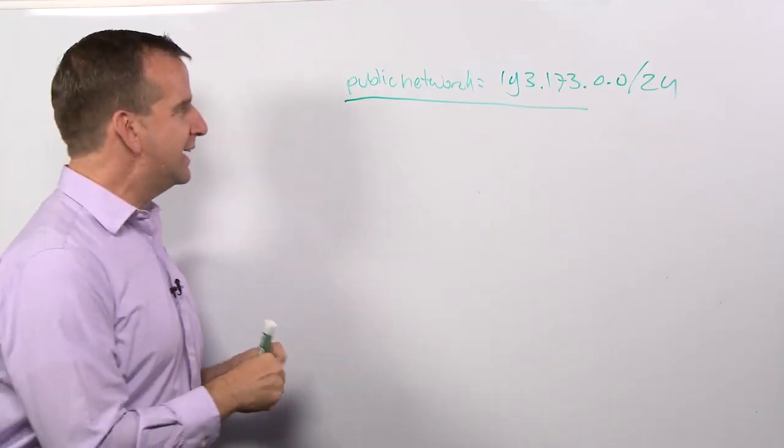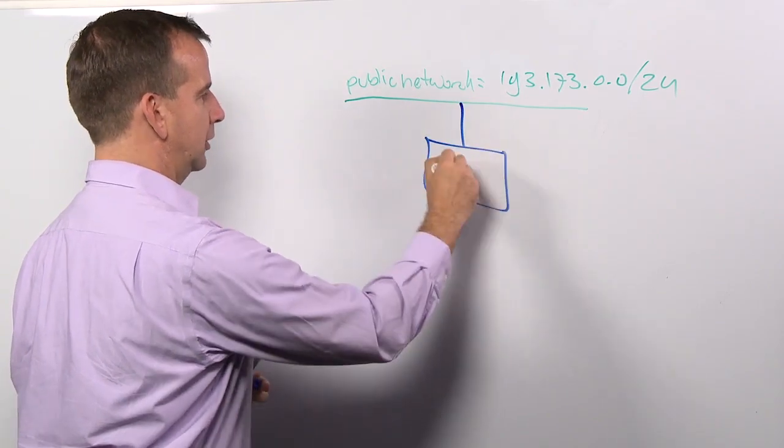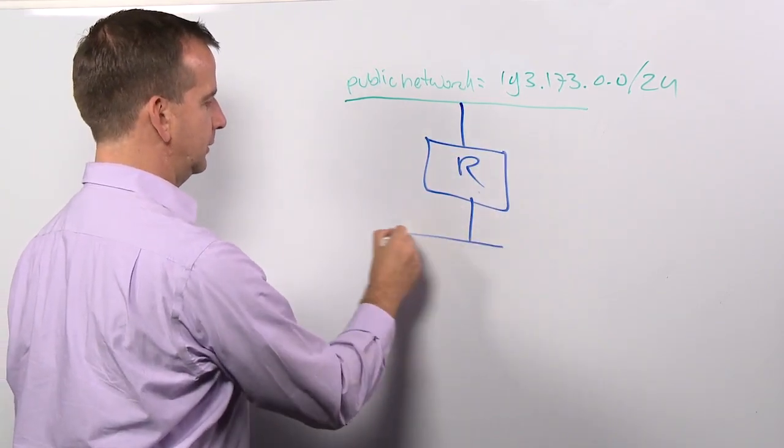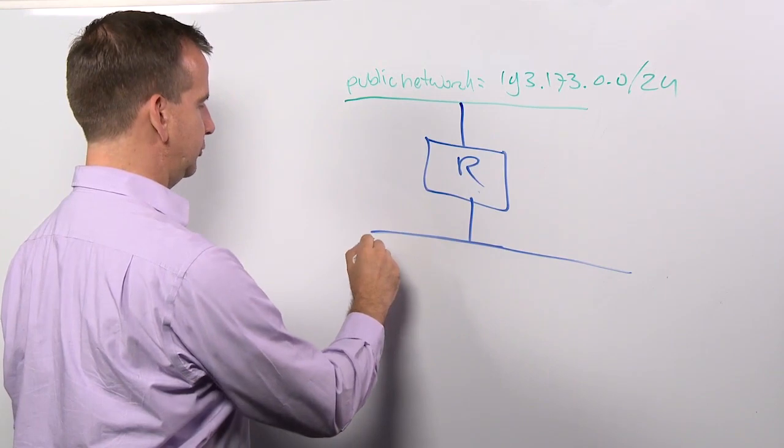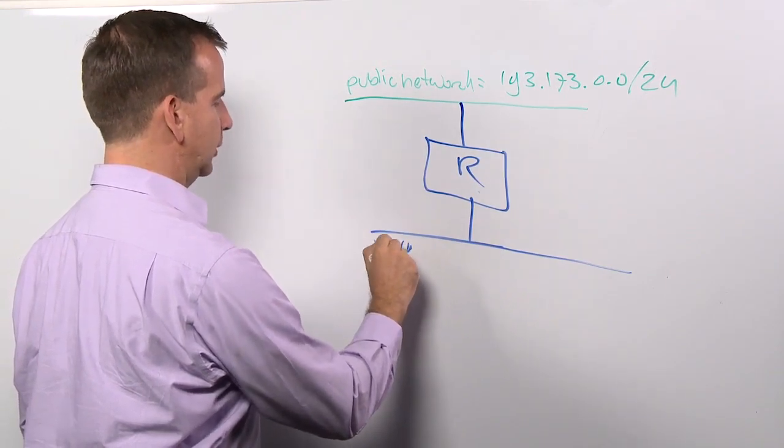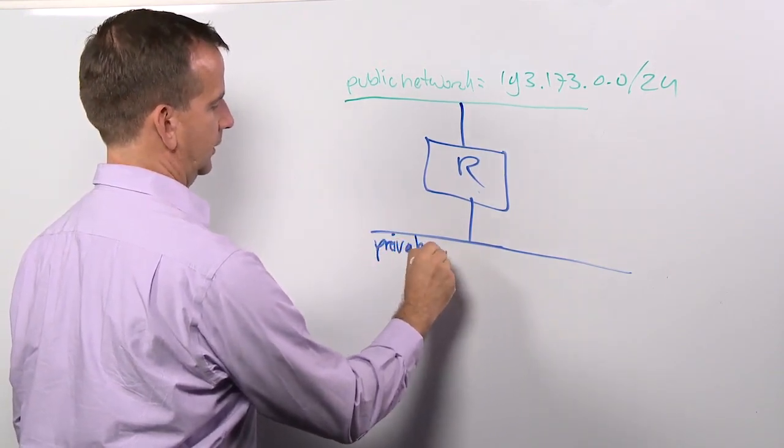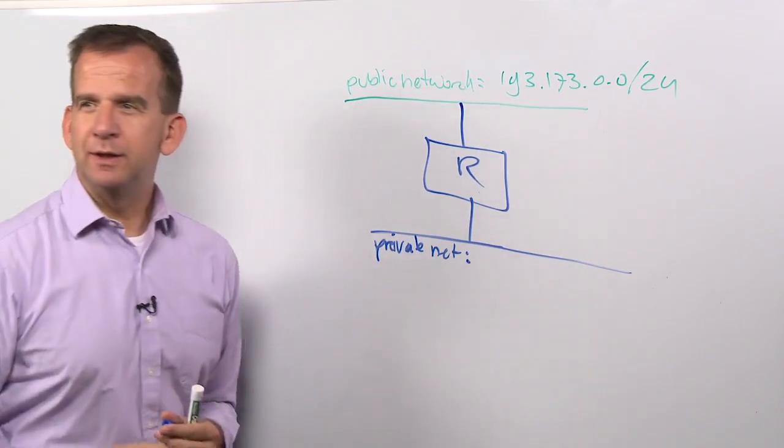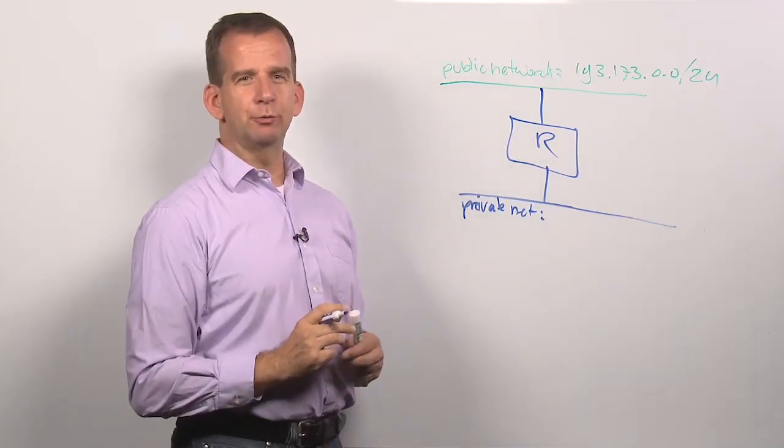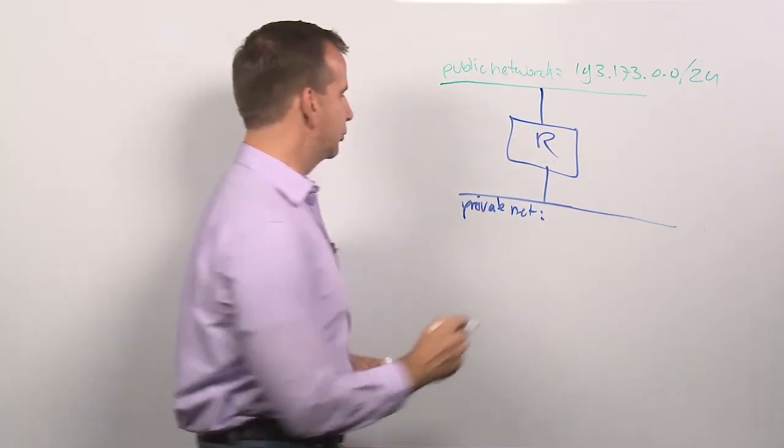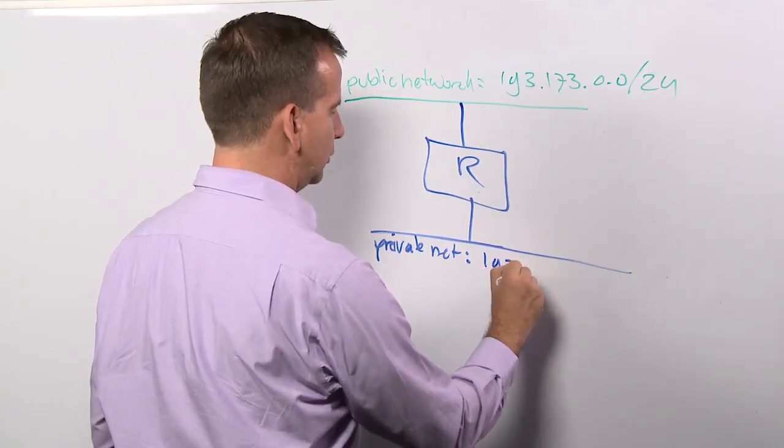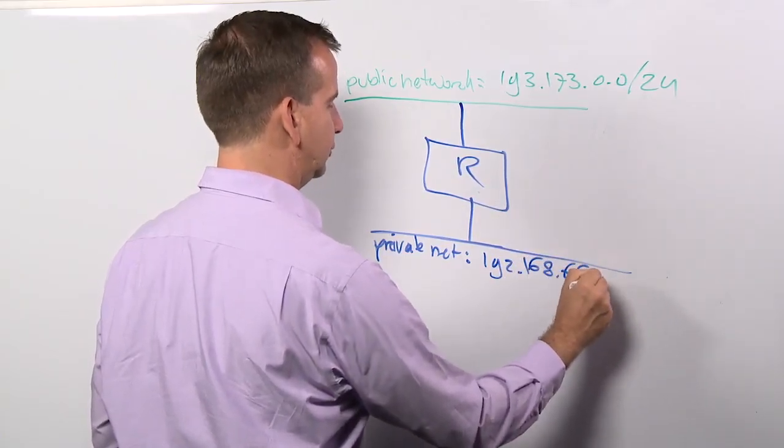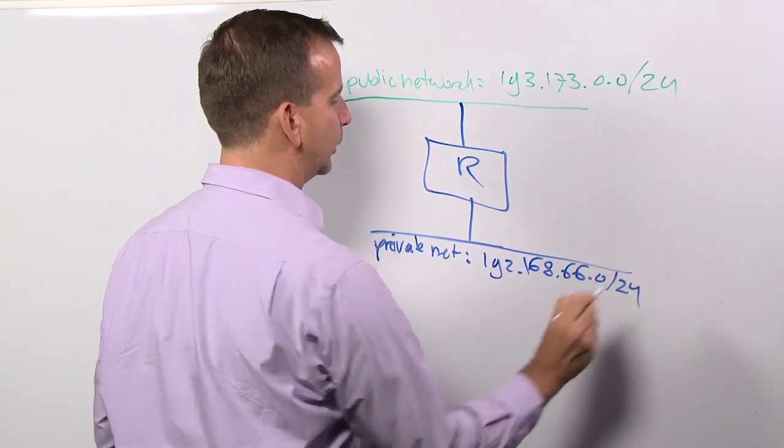Now as a tenant, you will create your own environment. You will create a router, and below the router there is the private network. This private network typically has an IP address range from the private IP address range, like 192.168.66.0/24.